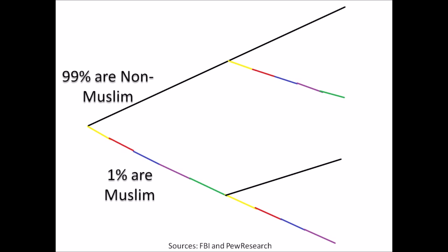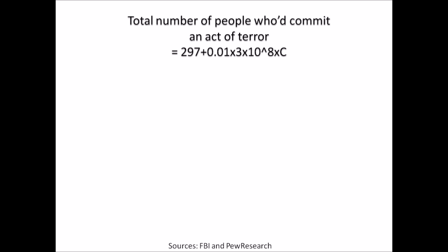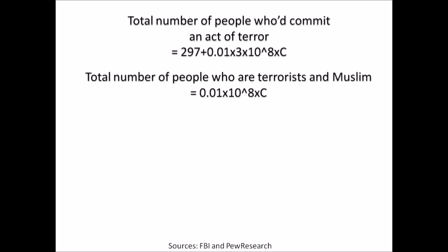Now that we know the straightforward method for Bayes' Theorem, let's use a corollary of Bayes' Theorem to investigate terrorism. The US Census reports that about 1% of Americans are Muslim. The US also has about 300 million citizens. Let's assume most non-Muslim citizens are lawful — only about 1 in a million non-Muslims are terrorists. And let's say that the chance that a Muslim citizen is lawful is 1 minus C, which implies there is a probability C for a Muslim to be a terrorist. So if we gather up all of the terrorists living in the United States, we'll have 297 plus another amount of terrorists who are also Muslim. Similarly, we can gather up all of the terrorists that are Muslim, but exclude all the terrorists that are non-Muslim, and we'll get a similar number minus 297.